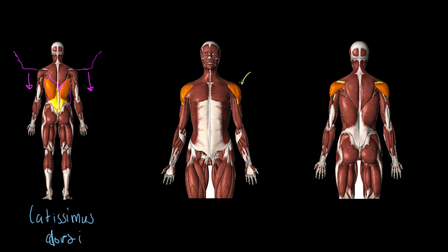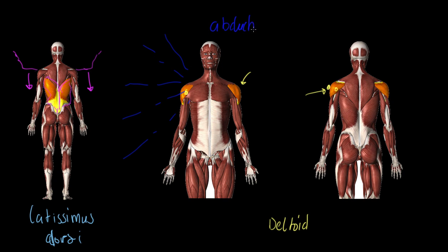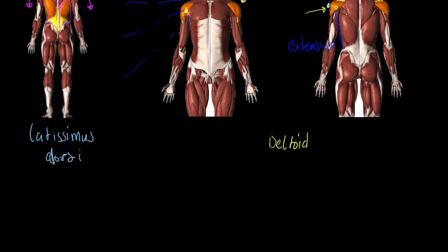We're now going to look at the deltoid muscle. I've got two images of this — both are the deltoid. We can recognise it has almost three parts: the front bit, the back bit, and the side bit. The deltoid is responsible for shoulder abduction — the shoulder moving out to the side. But the shoulder can also move the arm in front of the body, which we call flexion, and behind the body, which we call extension. So we've got flexion, extension, and abduction, all performed by the deltoid.